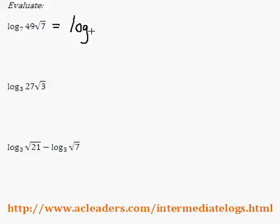Log base 7 of 49 root 7. And 49 is just 7 squared, and the root of 7 can be rewritten as 7 to the half.